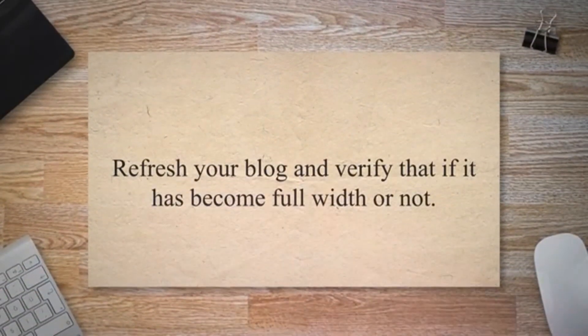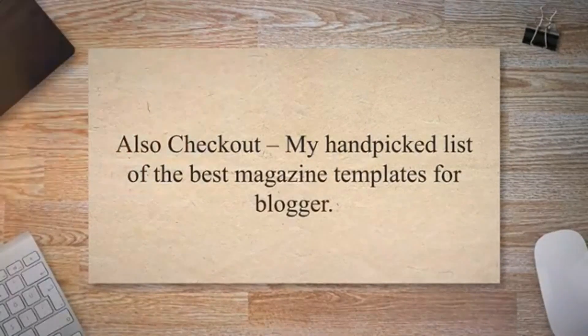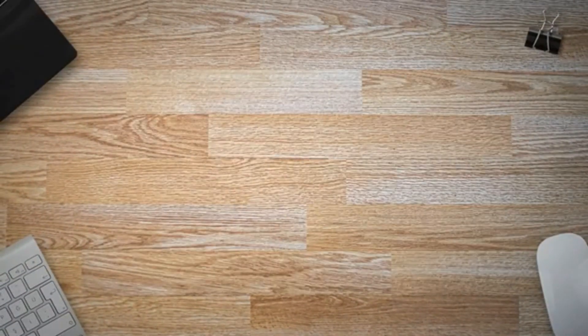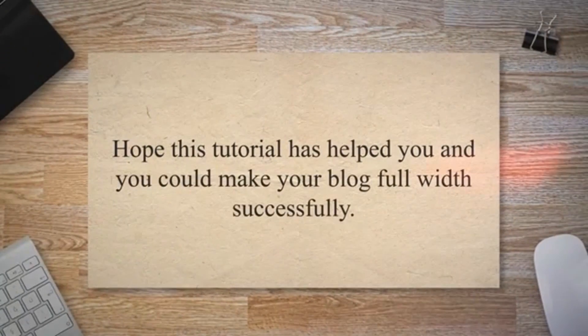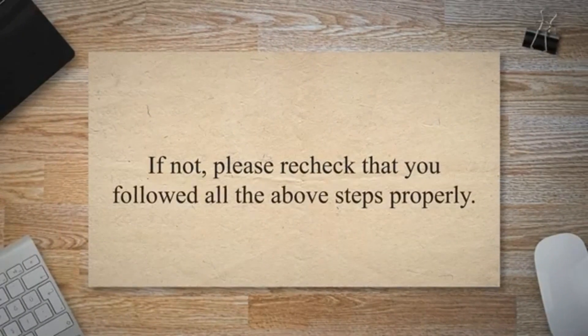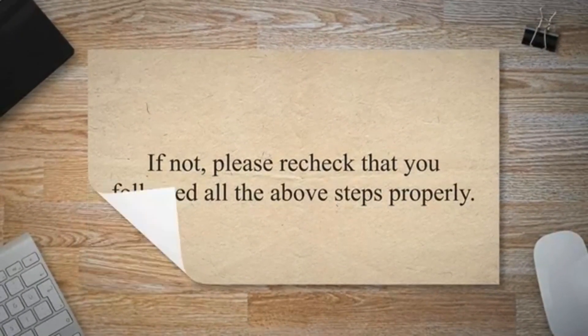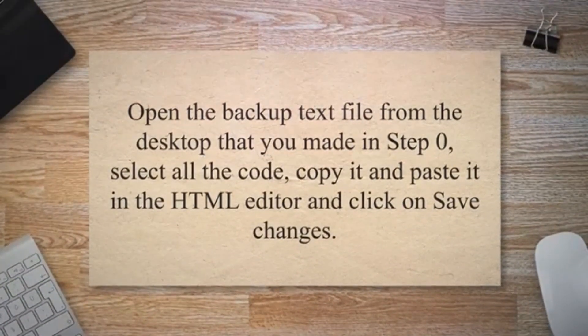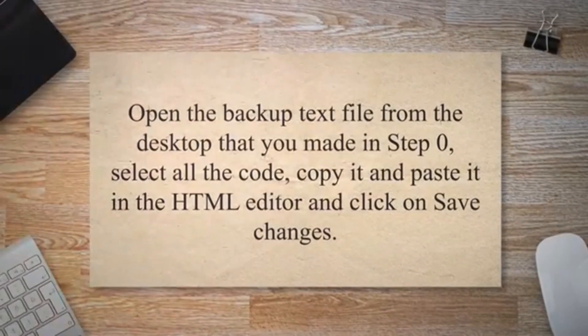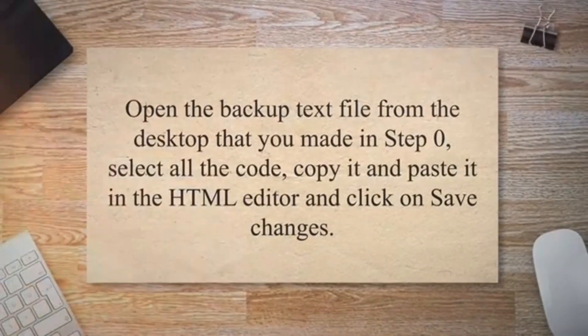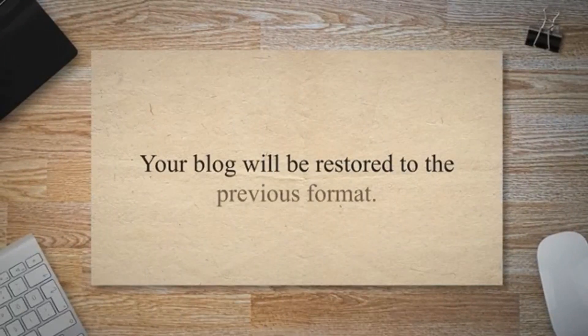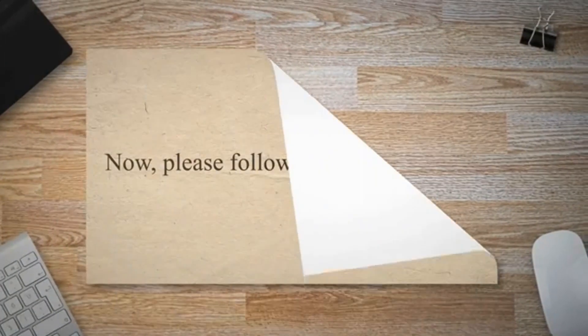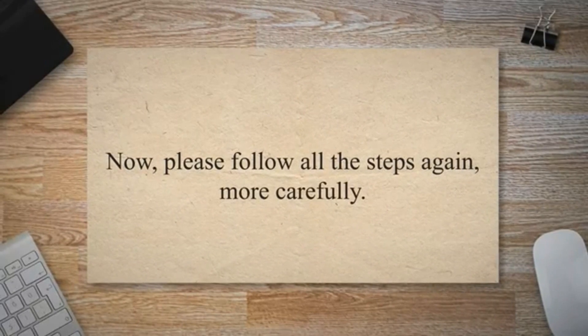Refresh your blog and verify that it has become full width. Also check out my hand-picked list of the best magazine templates for Blogger. Hope this tutorial has helped you and you could make your blog full width successfully. If not, please re-check that you followed all the above steps properly. Open the backup text file from the desktop that you made in step 0, select all the code, copy it, paste it in the HTML editor, and click Save Changes. Your blog will be restored to the previous format. Now please follow all the steps again, more carefully.